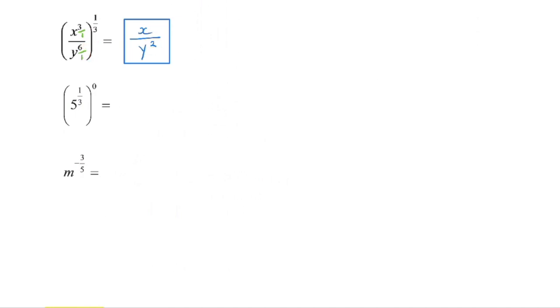In the next example we also have a power raised to a power, so we multiply those exponents. Anything times zero gives a value of zero, and we know that five to the power of zero equals one.